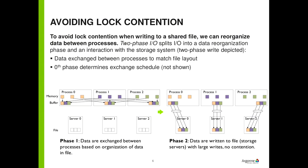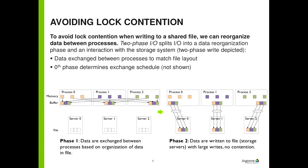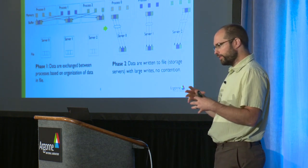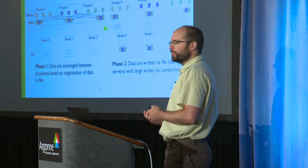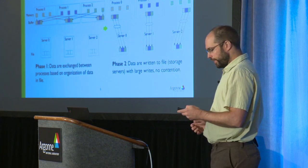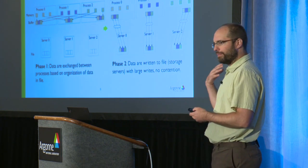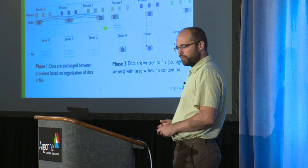Instead, in phase one, we'll use the network — these are high-end networks, we can push lots of data through them, and they're improving at a much faster rate than the storage networks. We're going to shuffle all the data, put it in the right format on the aggregator nodes, and then write out the data in the way it's supposed to be: big chunks, friendly to the file system, but with the structure the application wanted. This is kind of the best-of-both-worlds approach.